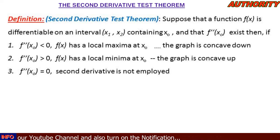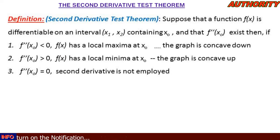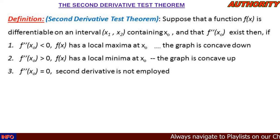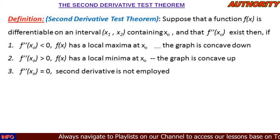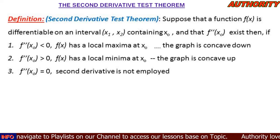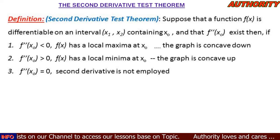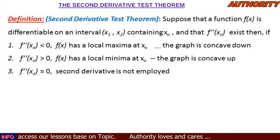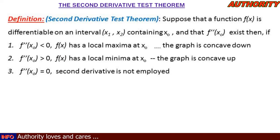We're going to find the first derivative, the second derivative, and then evaluate f''(x₀). If it is greater than zero or less than zero, we'll draw conclusions. If the function has a local maxima, the nature of the graph is concave down. If it is a local minima, the nature of the graph is concave up.